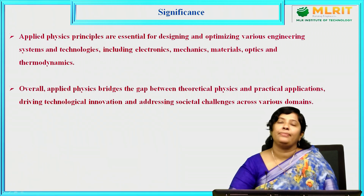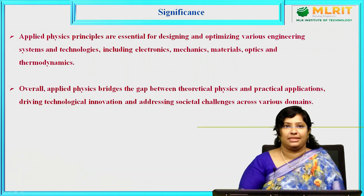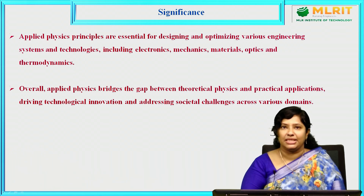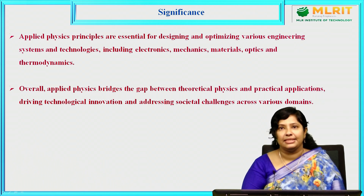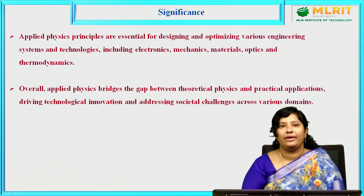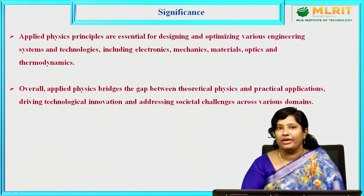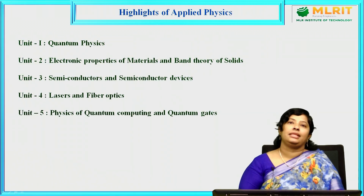What is the importance of applied physics at the engineering level? Applied physics principles are essential for designing and optimizing various engineering systems and technologies including electronics, mechanics, materials, optics, and thermodynamics. Overall, applied physics bridges the gap between theoretical physics and practical applications, driving technological innovation and addressing societal challenges across various domains.